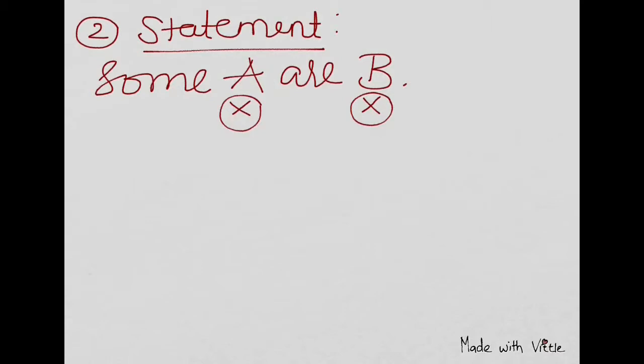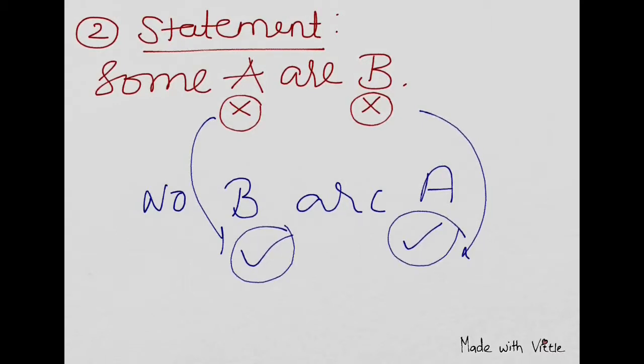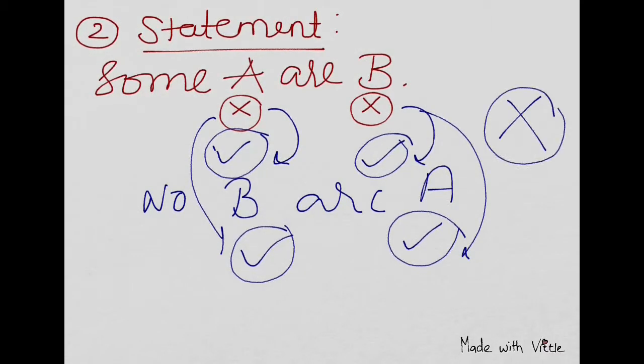Now let's take no B are A. What will be this? Tick tick. No. Is there anything like that? Nothing. You cannot distribute both of them. If you distribute both of them, that is not possible. I've told you, you cannot come from here to here. So tick tick is not possible. That's why it's impossible to do anything for this one. So no B are A is impossible.